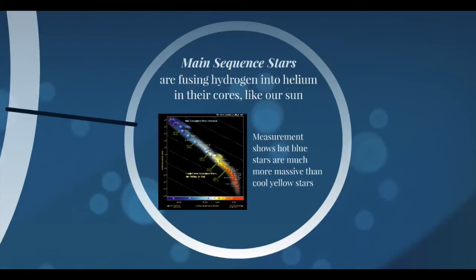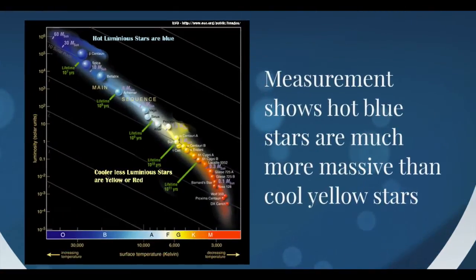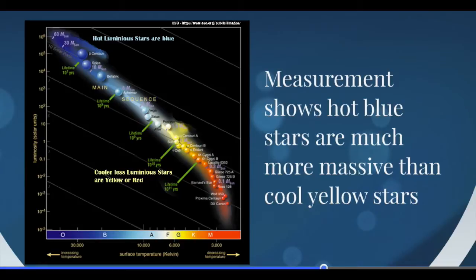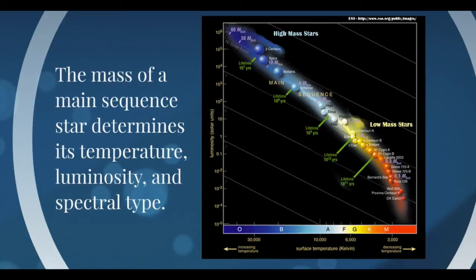Main sequence stars are fusing hydrogen into helium in their cores — stars similar to the Sun. Looking along the main sequence line, the Sun sits at one solar mass. As stars get smaller than the Sun, they become redder and cooler; as they become larger, they become bluer and hotter, and more luminous. The diagonal lines on the HR diagram represent stellar mass — cooler, dimmer red and yellow stars are lower mass, while hot blue stars are higher mass. Mass is what determines the temperature and luminosity of a star.